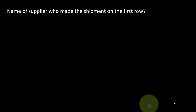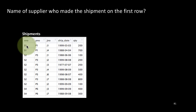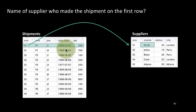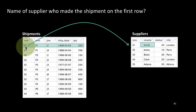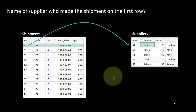Let us now delve a little deeper into this whole process. To take the first question — what is the name of the supplier who made the shipment on the first row? — looking at the shipments table, we see that the supplier on that row is S1. So we take the suppliers table, look up S1, and because the shipments table only has the supplier number, we go into the suppliers table to get all the other details. It turns out that S1 is Smith, and therefore Smith made the shipment on the first row.